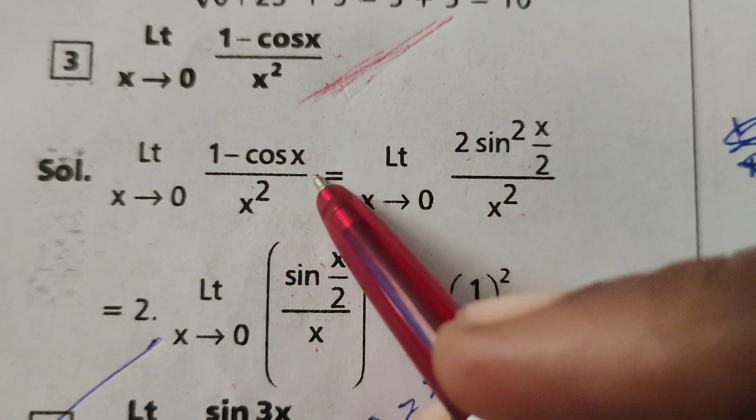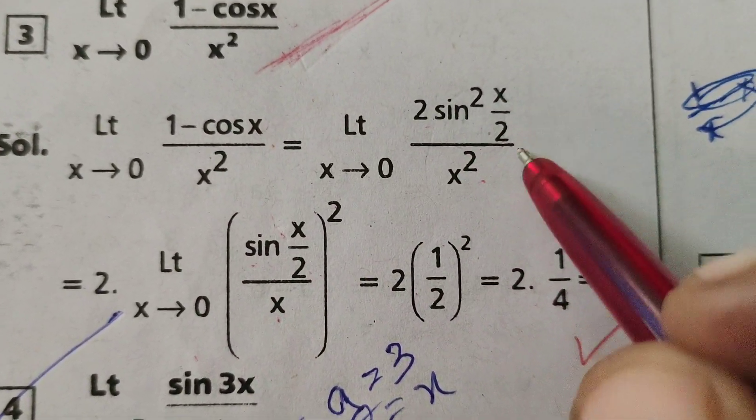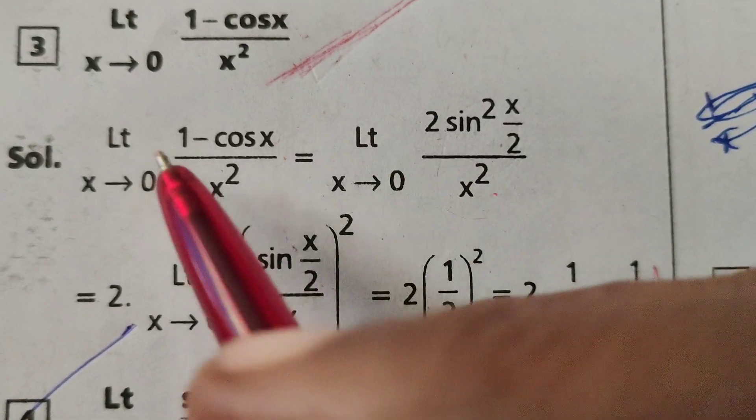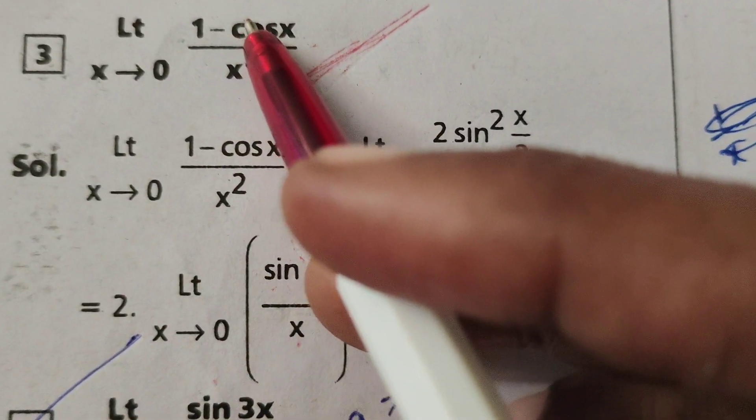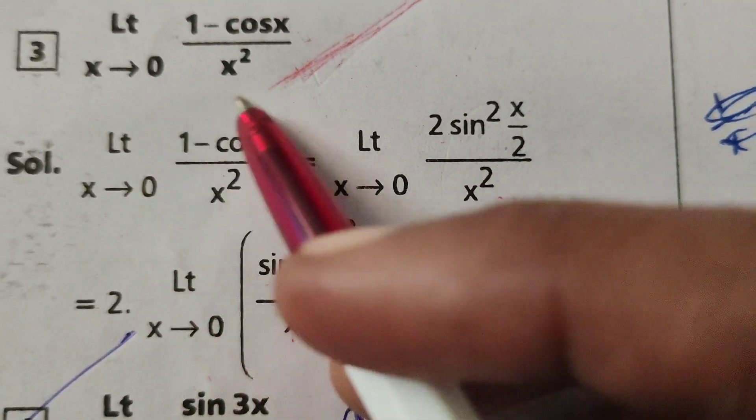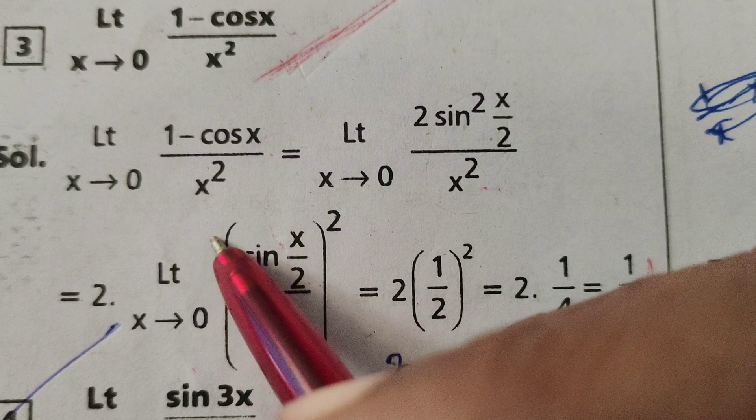Here, 1 minus cos x, write the formula 2 sin square x by 2 by x square as it is right. Limit x tends to 0 by the given problem right here, 2 sin square x by 2 in place of 1 minus cos x by x square.